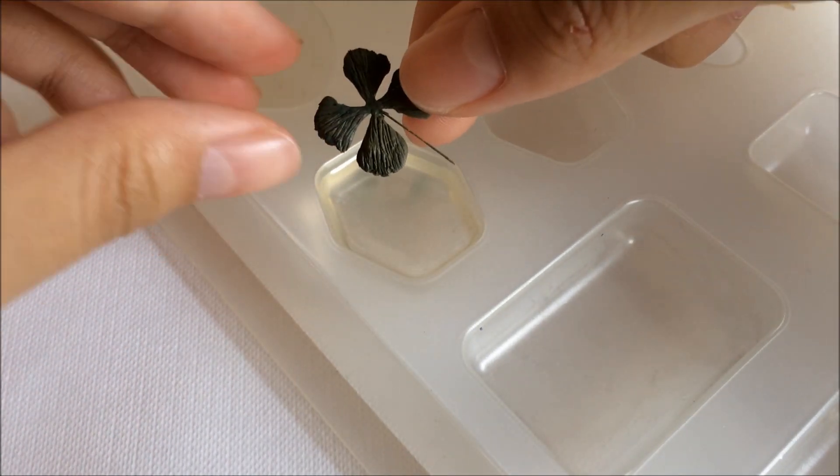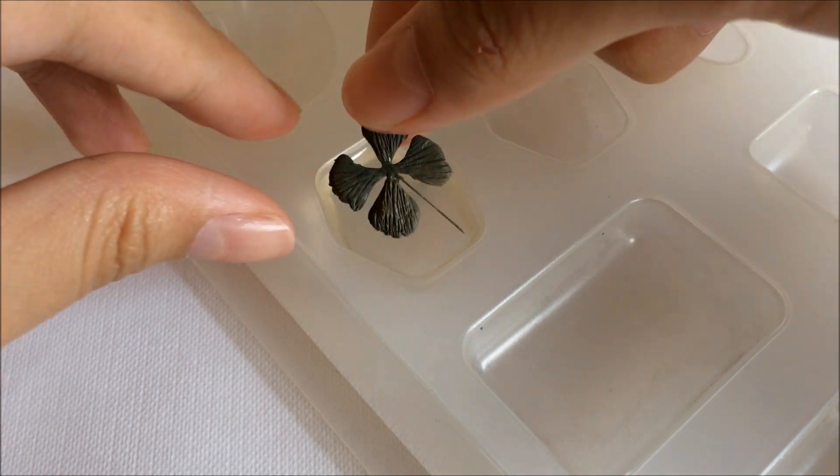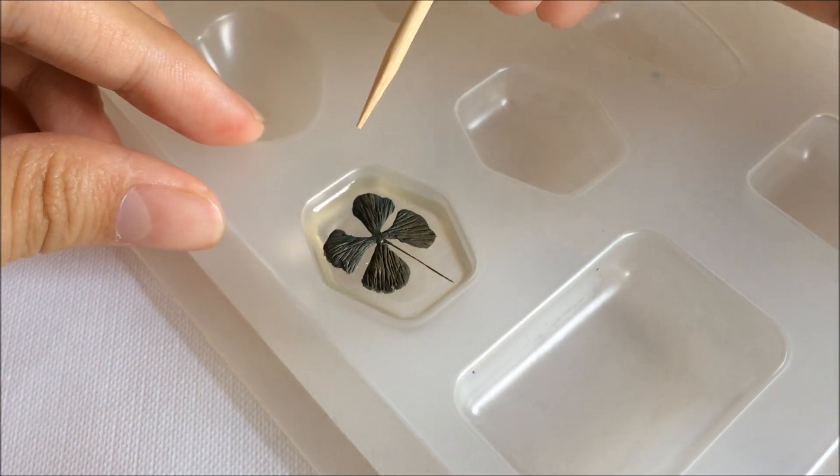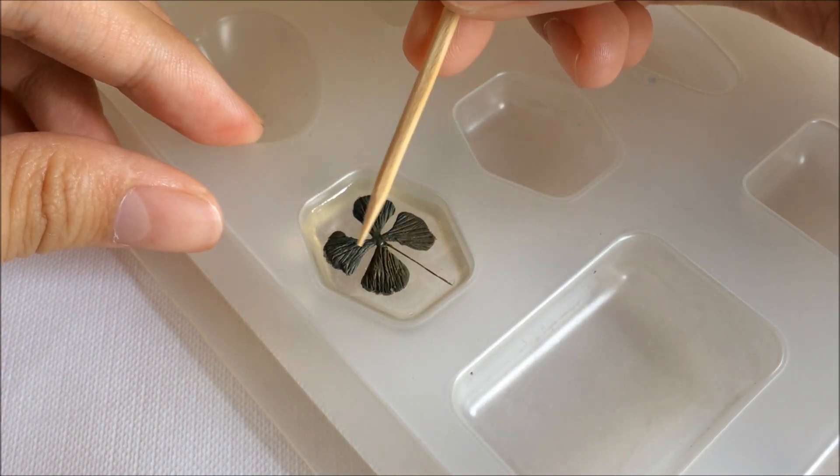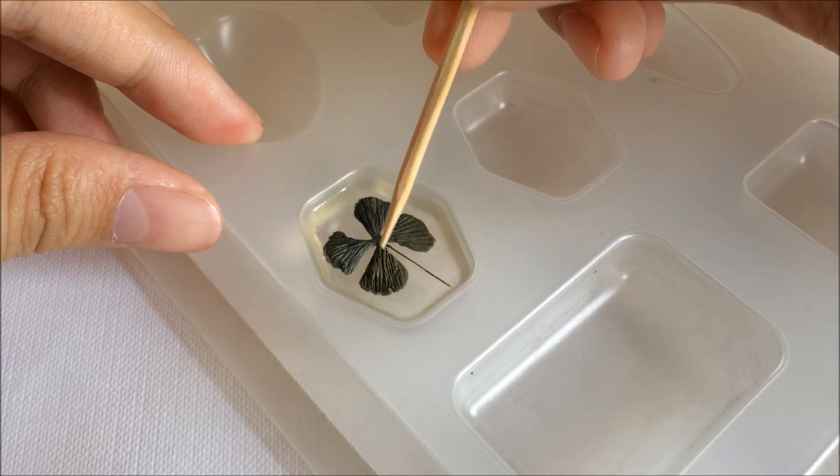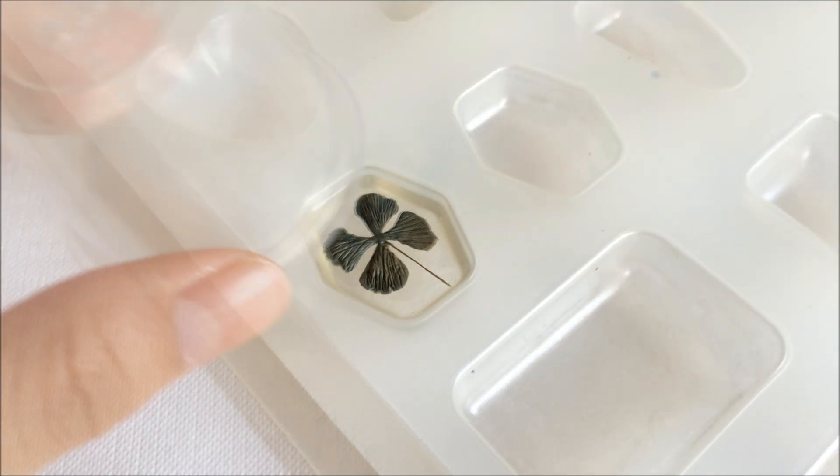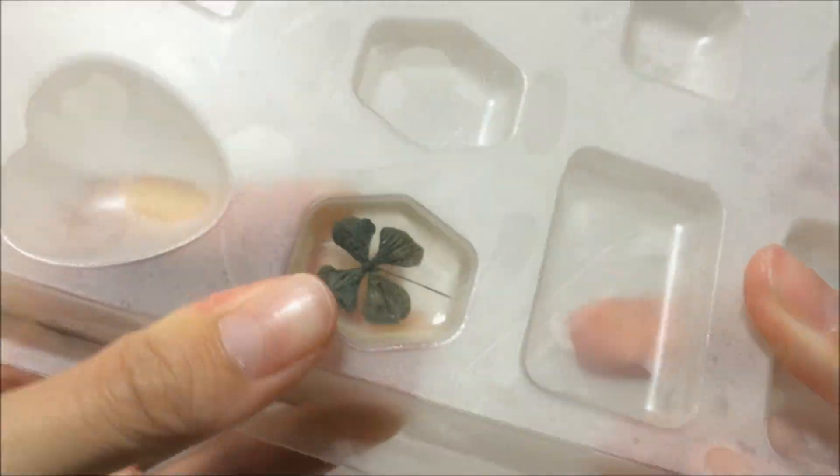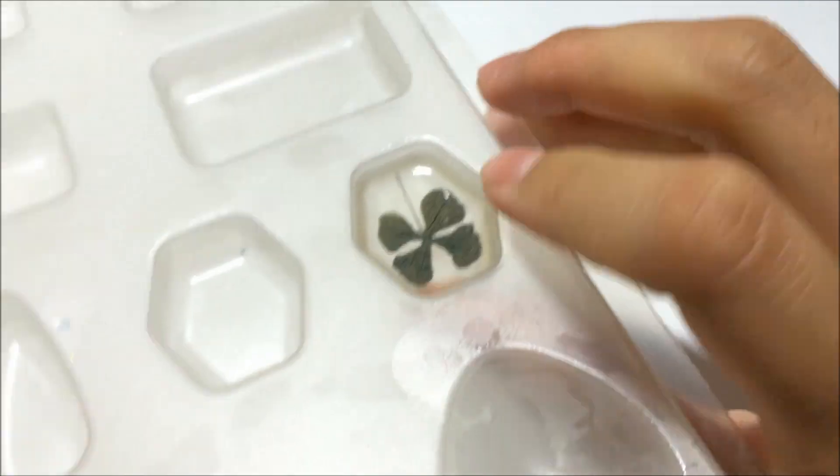Go ahead and put on your clover leaf. I'm putting mine facing upwards because I want my front to be facing upwards. Because these molds aren't really glossy at the bottom part, I'm using the top part instead.